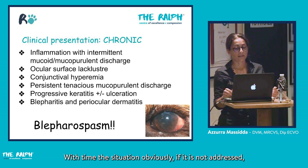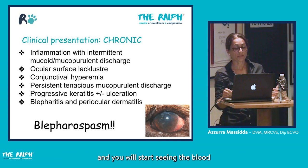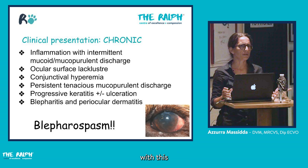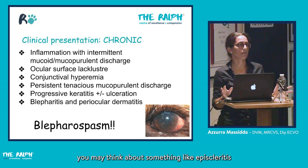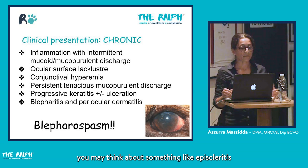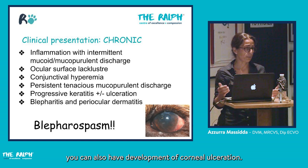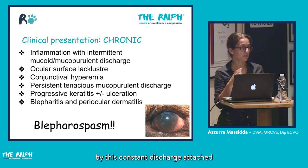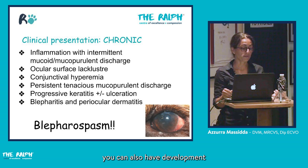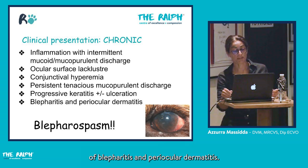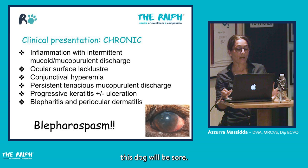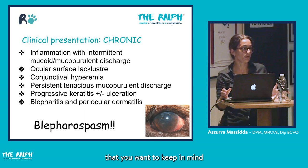The typical description from the owner is that the dog wakes up in the morning with the eye crusty and difficult to clean. With time, if not addressed, blood vessels will start growing on the corneal surface, the eye will be very red, and corneal ulceration can also develop. If the eyelids are affected by constant discharge, blepharitis and periocular dermatitis can also develop. These dogs will be sore — people who suffer from dry eye describe it as having sand in the eyes.